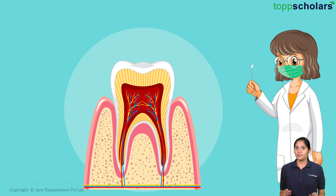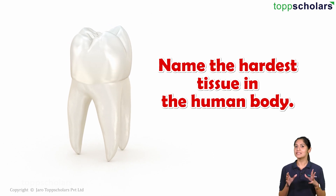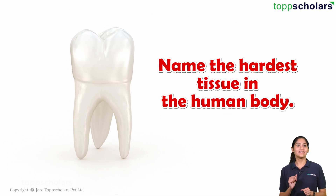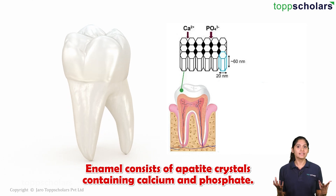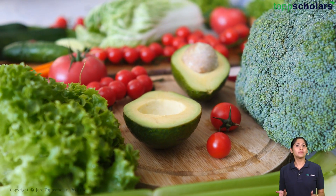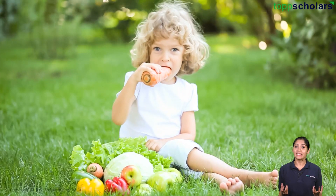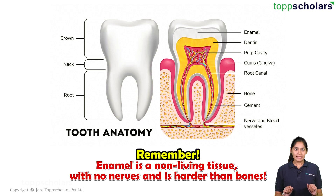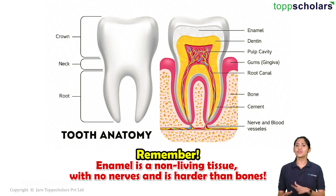First let's see the teeth. It has enamel, dentin and pulp. The white surface we see when a person smiles is nothing but the enamel. And if I ask you the hardest tissue in the human body, then you have to mention this enamel only. Enamel consists of apatite crystals containing calcium and phosphate. Also, the reason for people asking you to eat calcium rich foods is for better health of your teeth and bones as well. Please remember friends, the enamel is harder than bones and they are non-living tissues with no nerves.